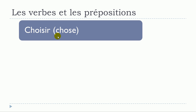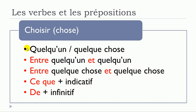The next verb is choisir. First structure: choisir quelqu'un, choisir quelque chose — no preposition. Or choisir entre quelqu'un et quelqu'un. In the same way, choisir entre quelque chose et quelque chose. It could also be choisir ce que plus verbe à l'indicatif. And the last one is choisir de plus verbe à l'infinitif.